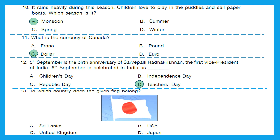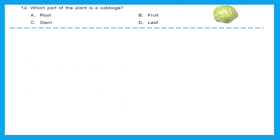Question 13: To which country does the given flag belong? This is the flag of Japan. Question 14: Which part of the plant is a cabbage? Is it root, fruit, stem or leaf? Cabbage is a leafy vegetable. Option D is the right answer.